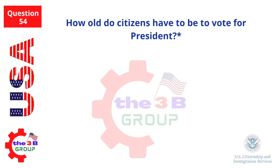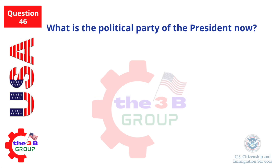How old do citizens have to be to vote for president? 18 and older. What is the political party of the president now? Democratic Party.